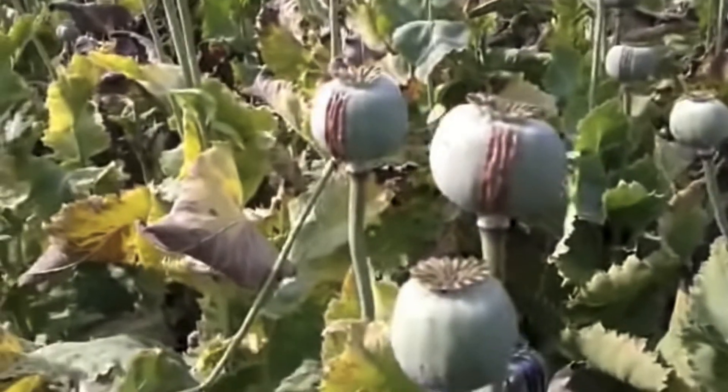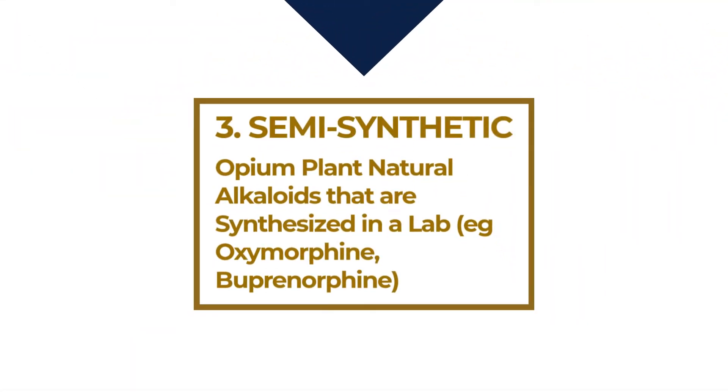Class three of opioids are semi-synthetic opioids. These are things that come from the opium poppy plant but have been semi-synthesized in a laboratory. For example, oxymorphone and buprenorphine — the main ingredient in Suboxone and Subutex — are semi-synthetic opioids, derived from thebaine, a natural opium alkaloid, and then further modified by scientists in the laboratory. So that's semi-synthetic: part natural, part unnatural.